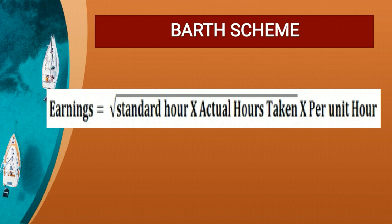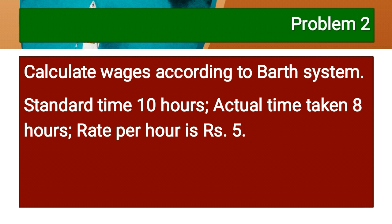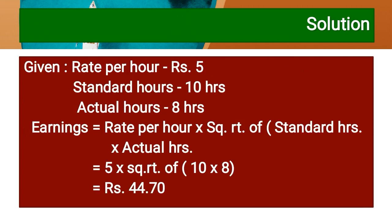Bath Scheme: Calculate wages. Standard time 10 hours, actual time taken 8 hours, rate Rs. 5. Formula: Earnings = Rate per hour × √(Standard Hours × Actual Hours). So: 5 × √(10 × 8) = 5 × √80 = 5 × 8.944 = Rs. 44.70.